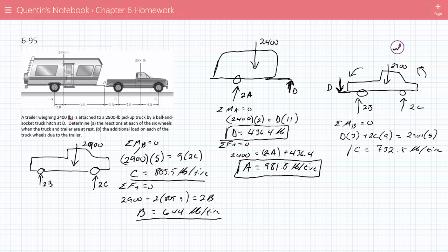So on the front wheels, it's experiencing 732.8 pounds on each tire. And then again, just do the sum of the forces in Y equals zero is going to give you 2,900 plus D is equal to 2B plus 2C. So, this is going to give you that B is equal to 935.4 pounds per tire.